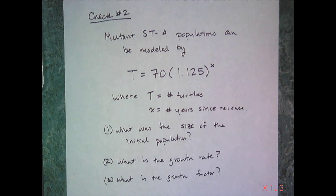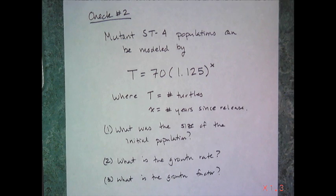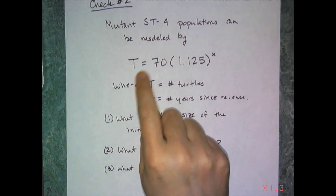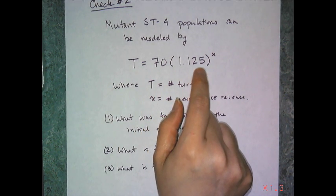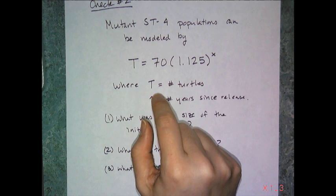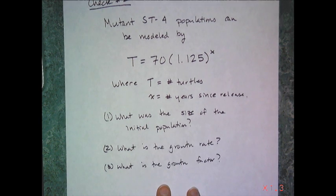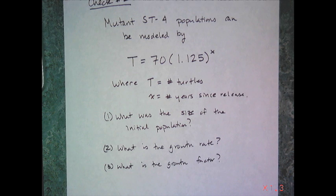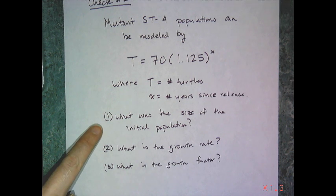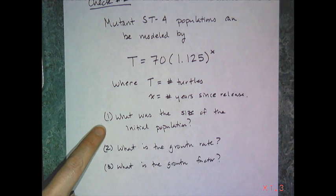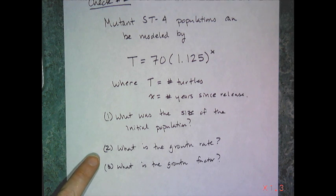Now for the final check in the lesson, let's say I have mutant ST-4 populations that are modeled by this equation: T equals 70 times 1.125 raised to the X, where T is the number of turtles and X is the number of years since their release. So I have three questions for you. One, what was the size of the initial turtle population? Two, what is the growth rate of that population? And three, what is the growth factor of that population?